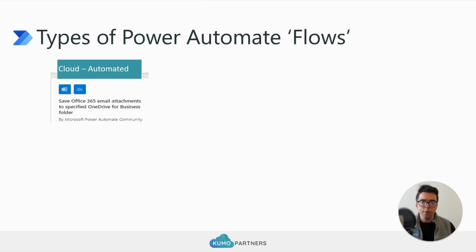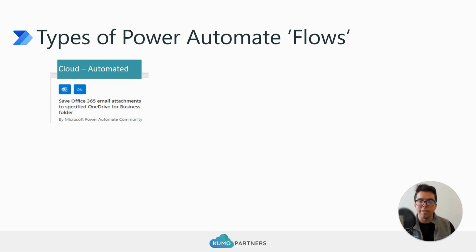There are a few different types of Power Automate flows. There are three types of Cloud Flows, which is the main domain. The first is Cloud Automated Flows. A great example is an event in one of those systems that triggers the workflow to run — for instance, when you receive an email, send the attachments over to OneDrive. That's an example of an Automated Cloud Flow.